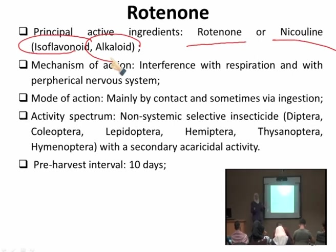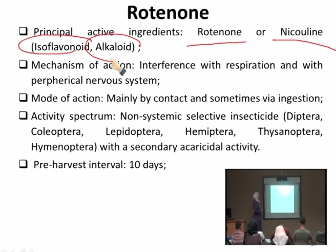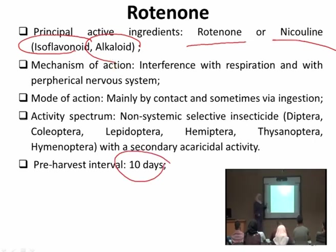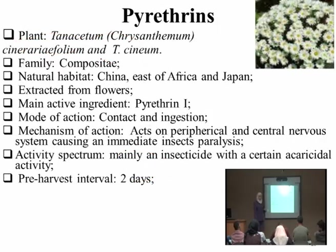Rotenone affects Diptera, Coleoptera (beetles), Lepidoptera (moths), Hemiptera, Thysanoptera (thrips), and Hymenoptera (wasps and bees). It also has incidental acaricidal effect on mites and small spiders. Pre-harvest interval is ten days due to its longer residual effect.